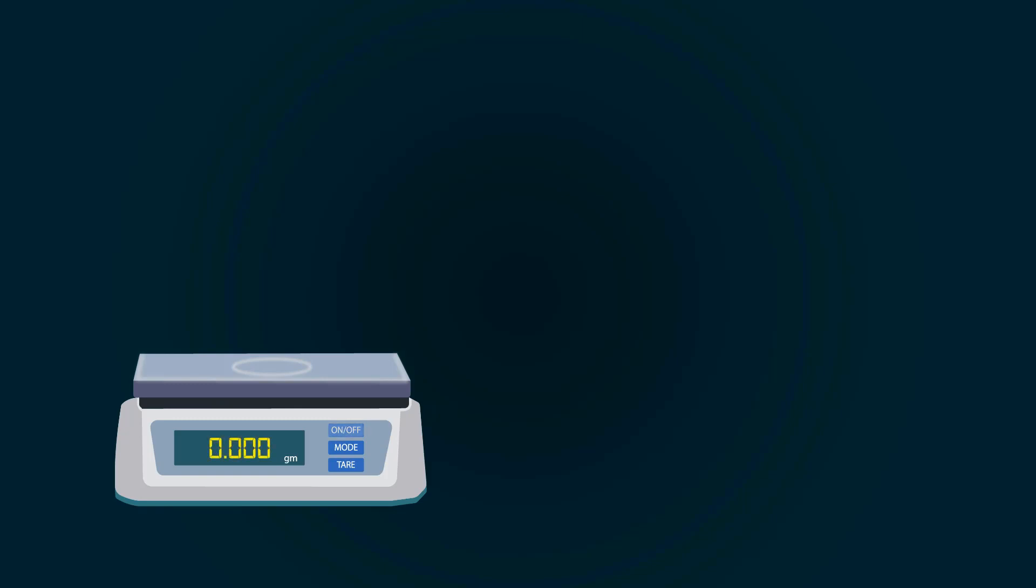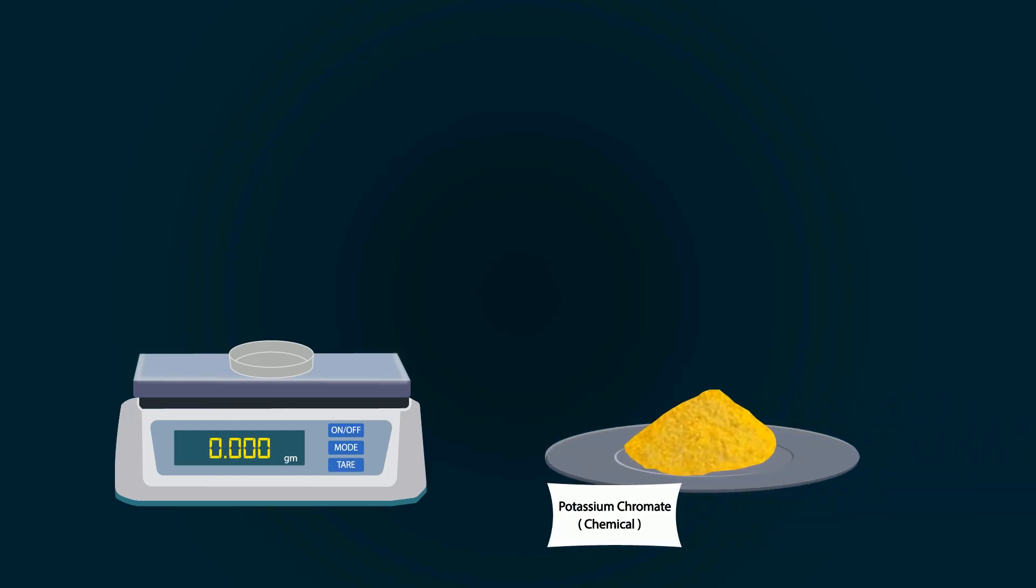First of all, take a weight balance and power it on. Put a petri dish on it and tare it down. Now take potassium chromate chemical from the stock bottle.